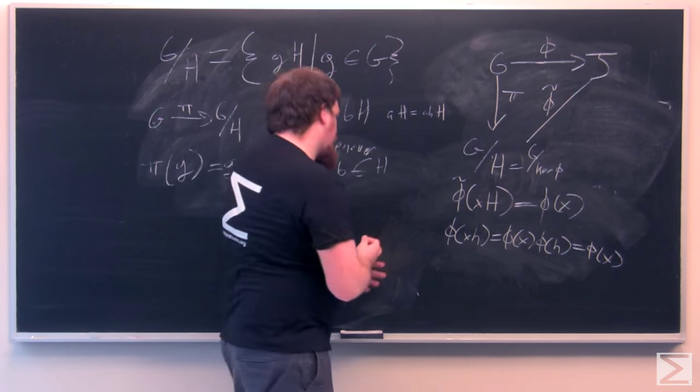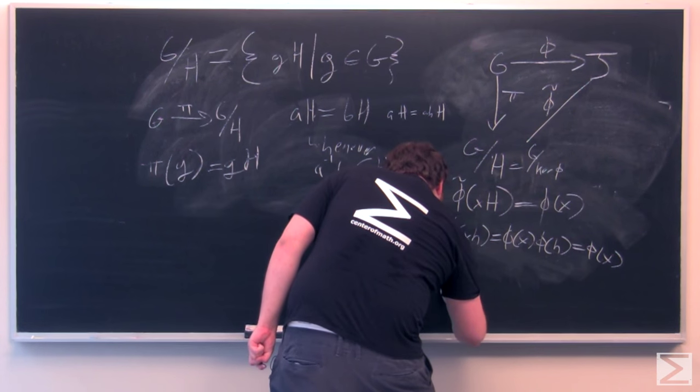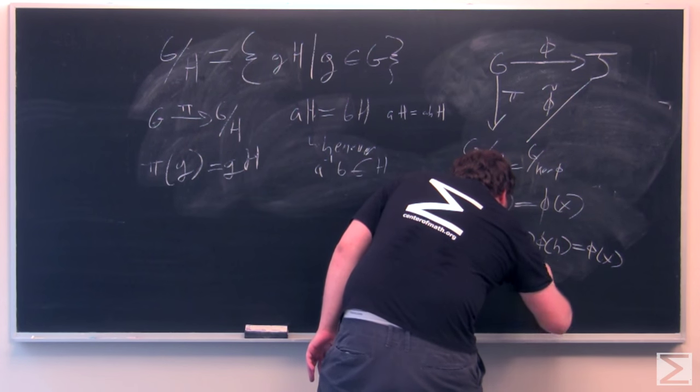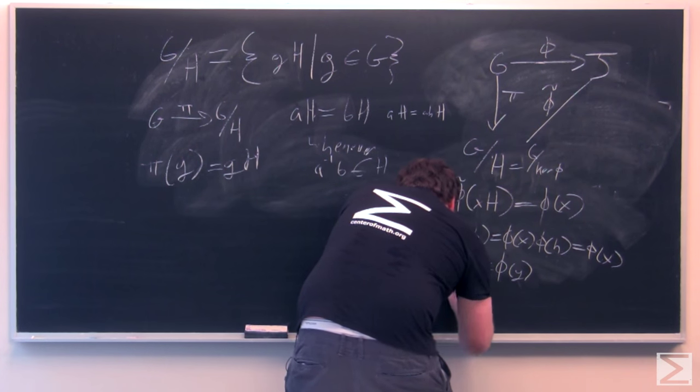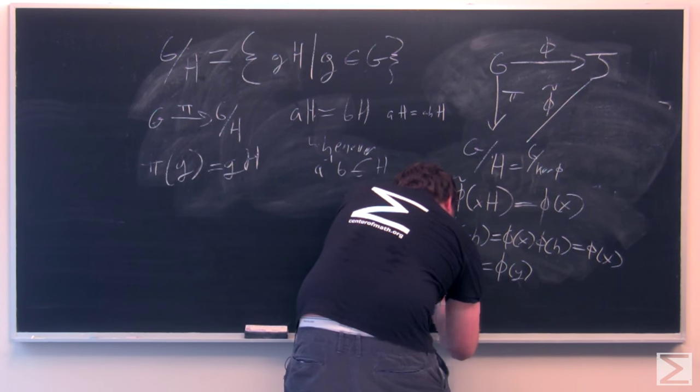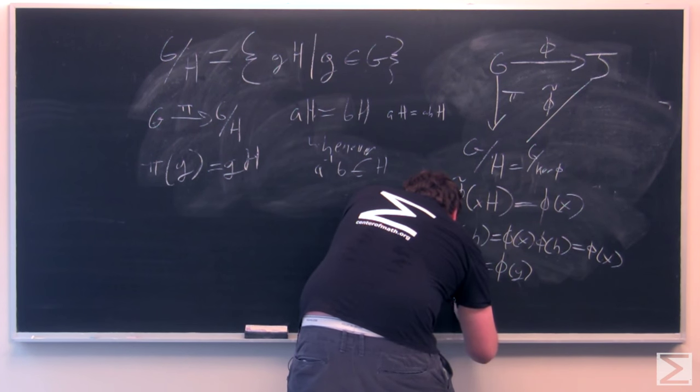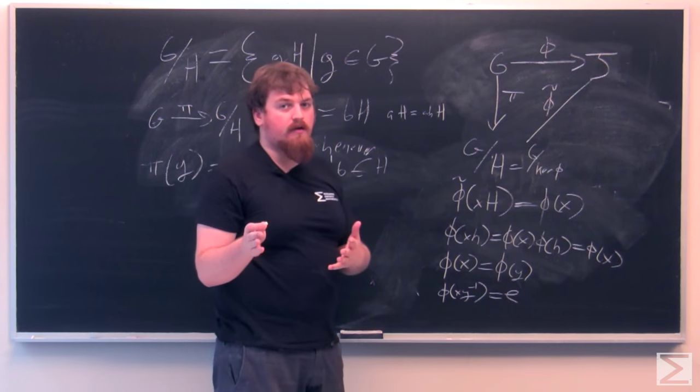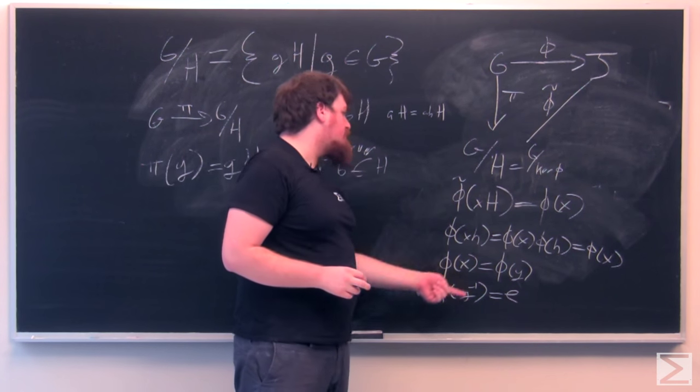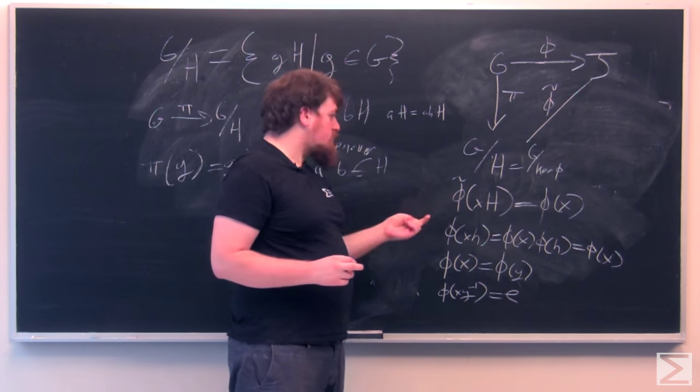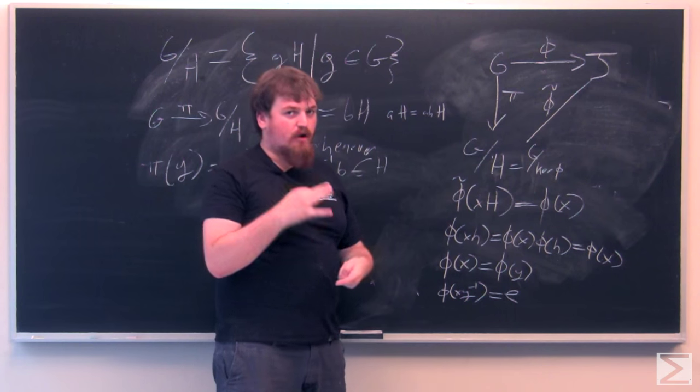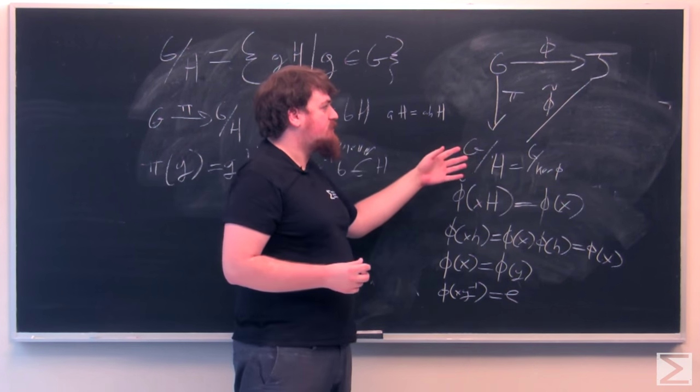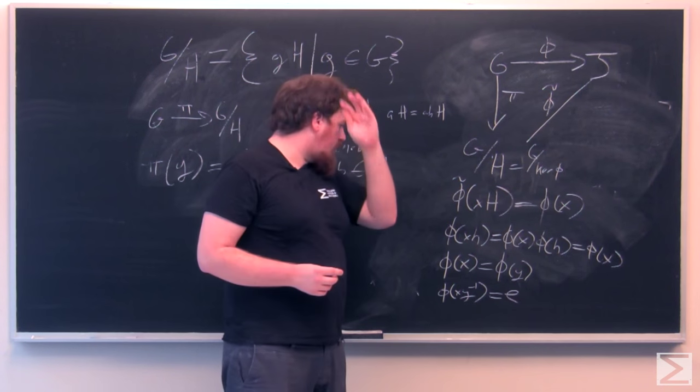Additionally, if phi of X equals phi of Y, that means that phi of XY inverse is the identity of J. And this thing means that XY inverse is going to be an element of H, which further means that XH and YH are the same coset.